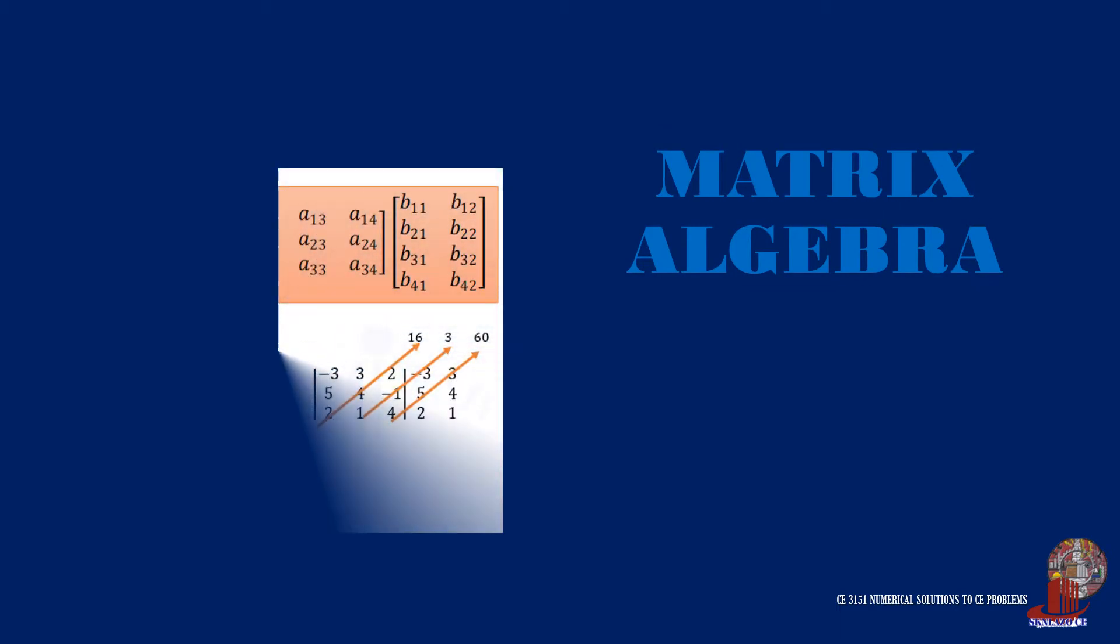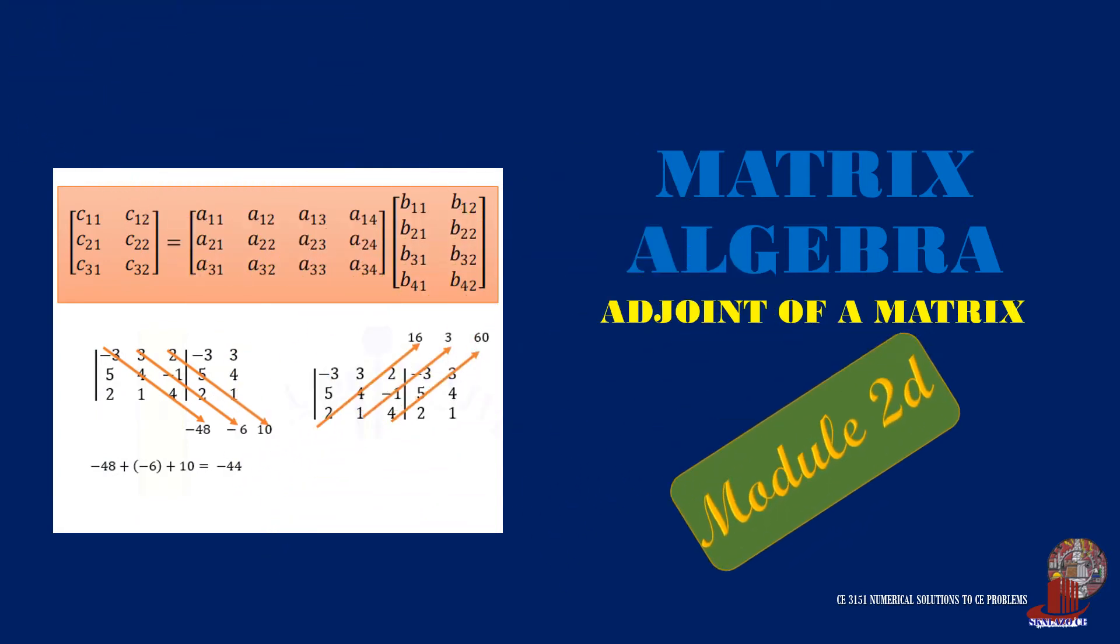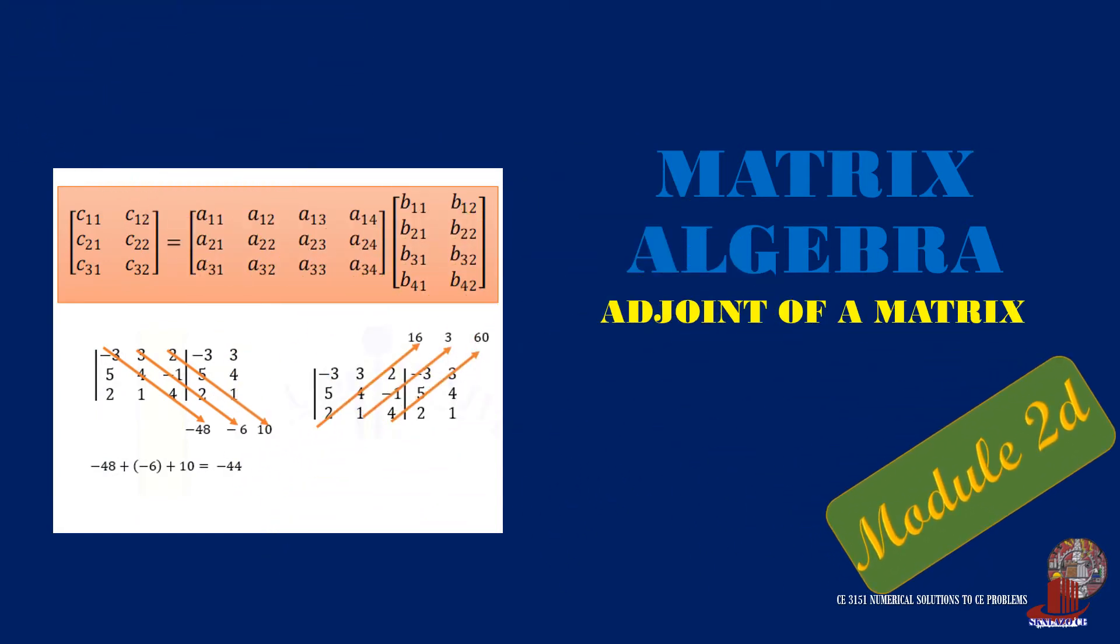Adjoint matrix is a combination of taking the cofactors and transposing the resulting matrix. Learn more on how to take the adjugate of a matrix in this video. Welcome to Numerical Solutions to CE Problems.